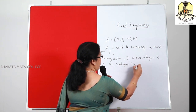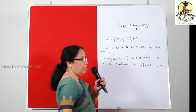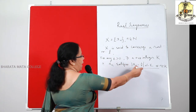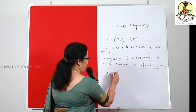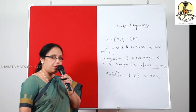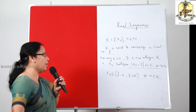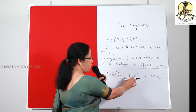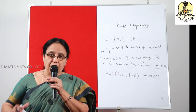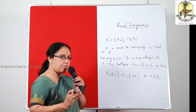such that the terms of the sequence X_N satisfy: modulus of X_N minus L is less than epsilon, for all N greater than or equal to K. This is the formal definition of convergence of a sequence. The meaning of this condition is, when we expand the modulus, we get X_N belonging to the open interval (L minus epsilon, L plus epsilon), which is a neighborhood of L. Every neighborhood of L contains the major part of the sequence except for a finite part, and so we say the sequence X_N converges to L.